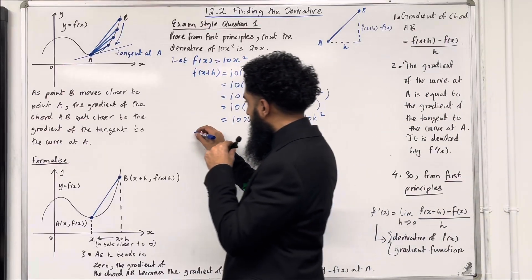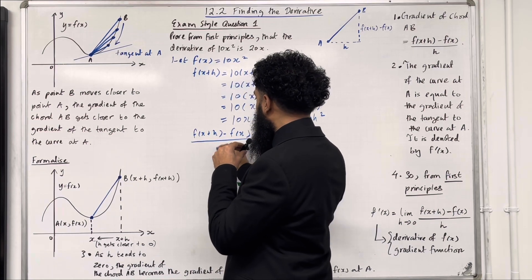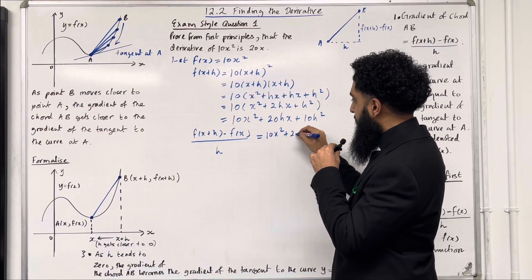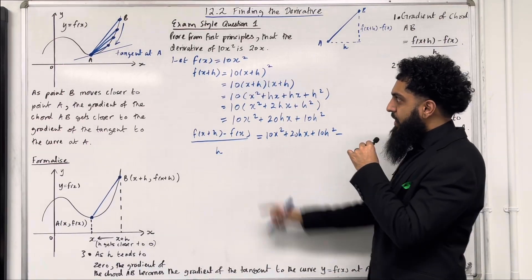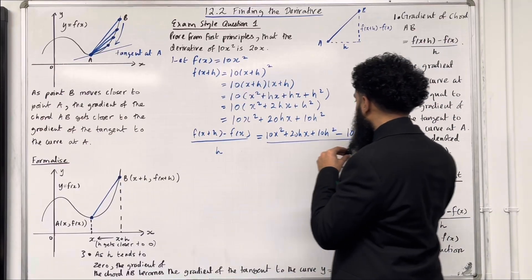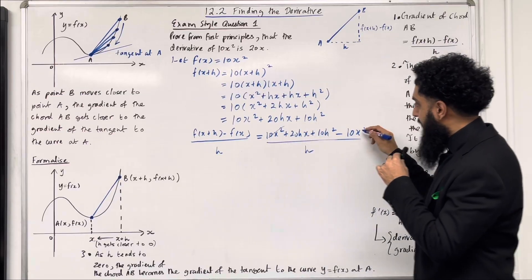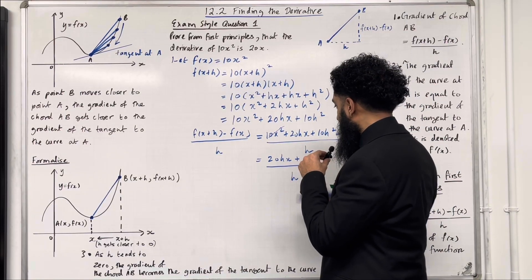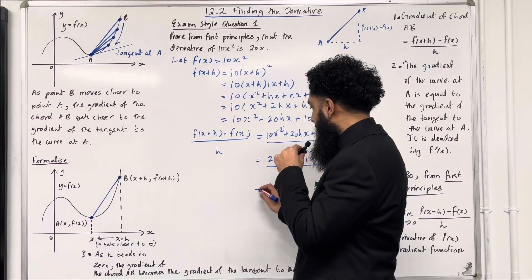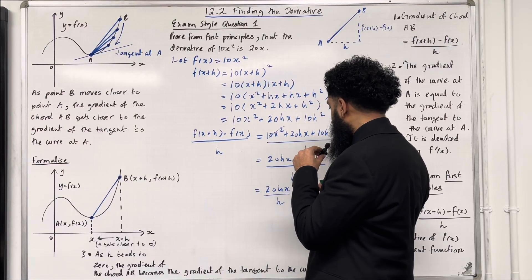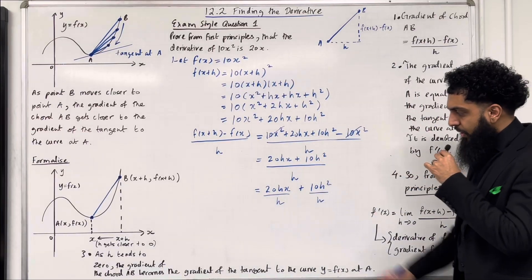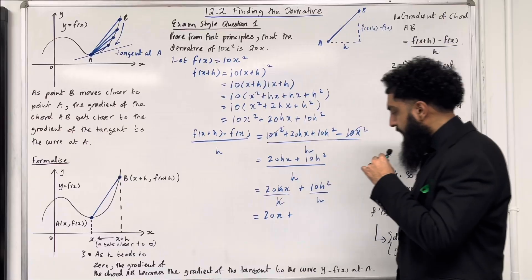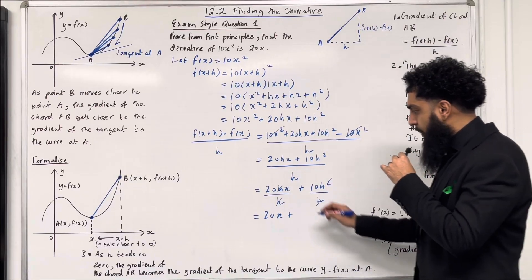Now I'm going to work out f of x plus h minus f of x, all over h. So that would be f of x plus h — which is 10x squared plus 20hx plus 10h squared — take away f of x, which is 10x squared, all over h. The 10x squareds cancel out, leaving us with 20hx plus 10h squared, all over h. We can split this into two fractions: 20hx over h plus 10h squared over h. For the first fraction, the h's cancel, giving 20x. For the second, one h cancels, leaving 10h.